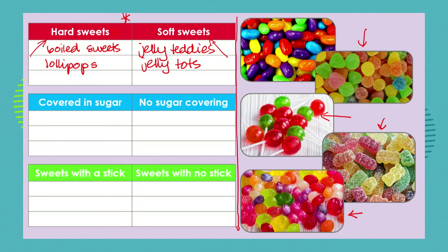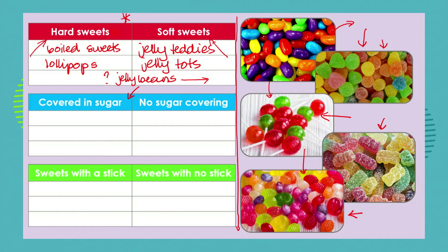But sometimes we end up with problems. What do we do with the jelly beans? Because the jelly beans start with a hard outside and then inside they're soft. They're certainly not as hard as lollipops or boiled sweets, but they're not quite as soft as jelly tots or jelly teddies either. So we have some problems. Let's try looking at a different characteristic for classification — whether the sweets are covered in sugar or don't have a sugar covering.